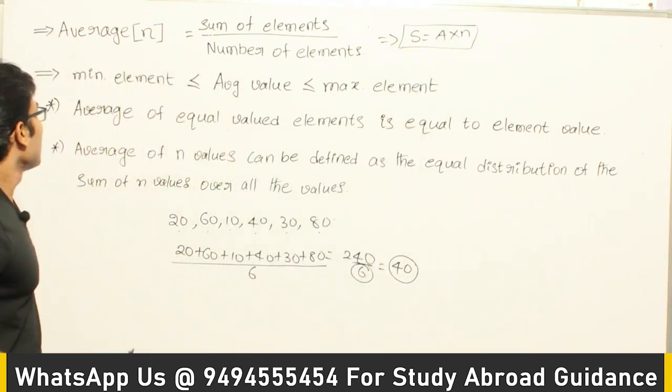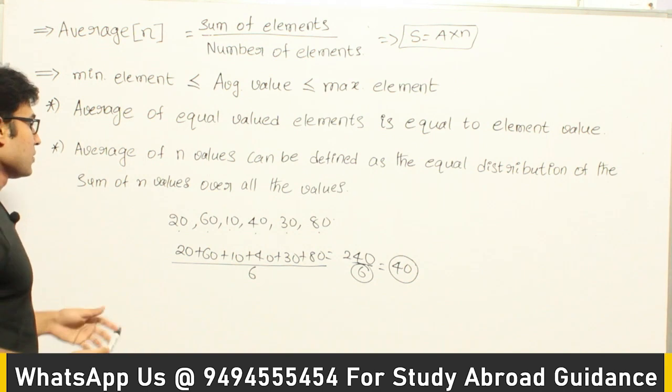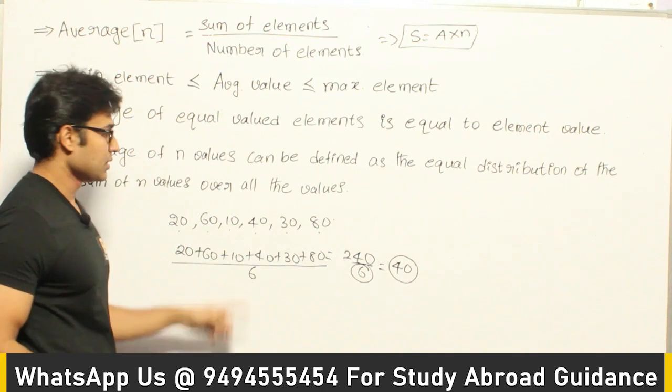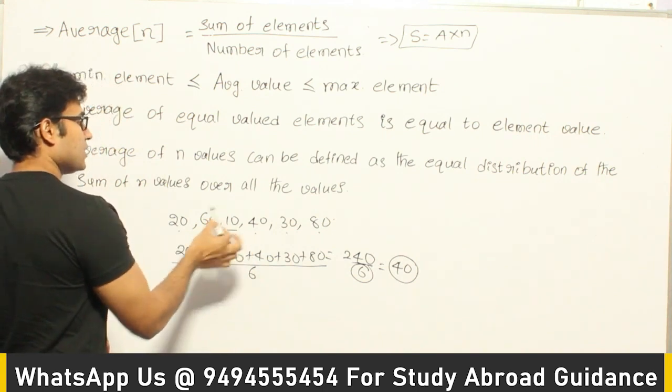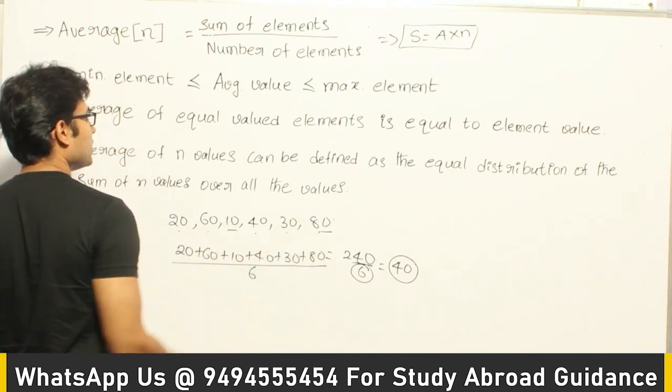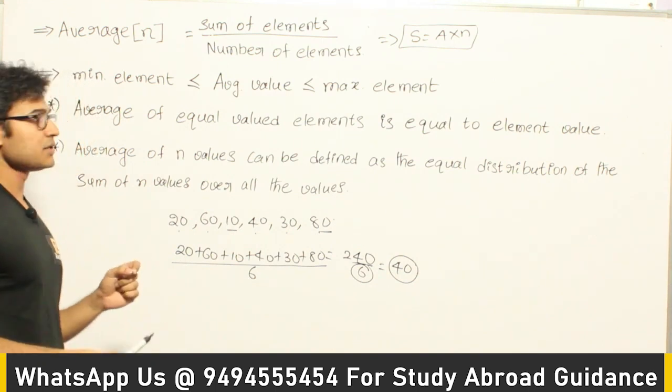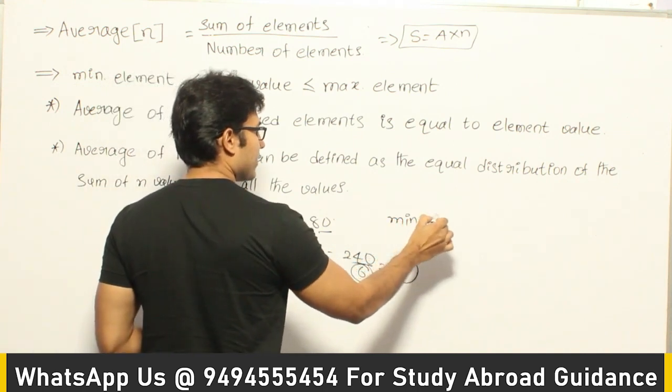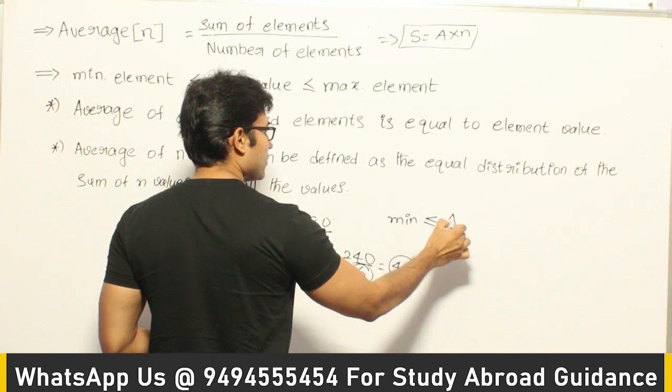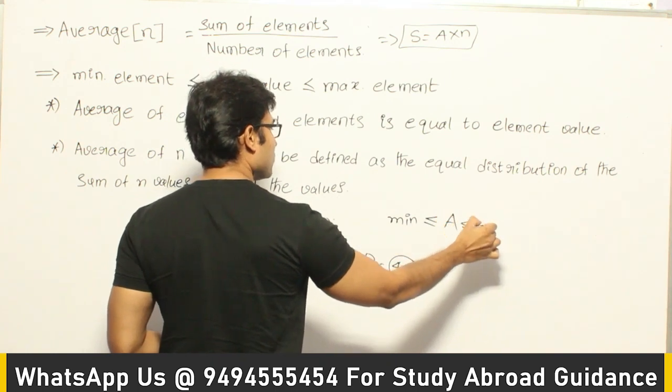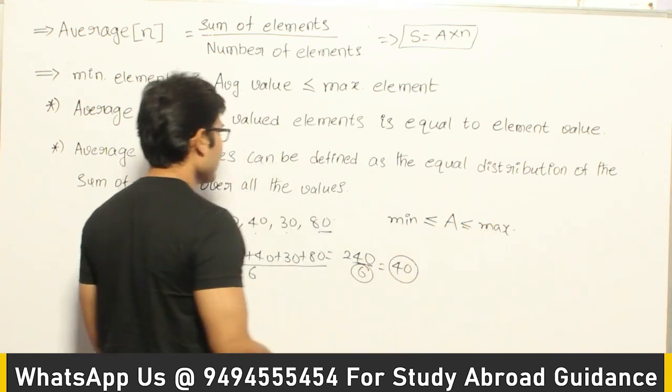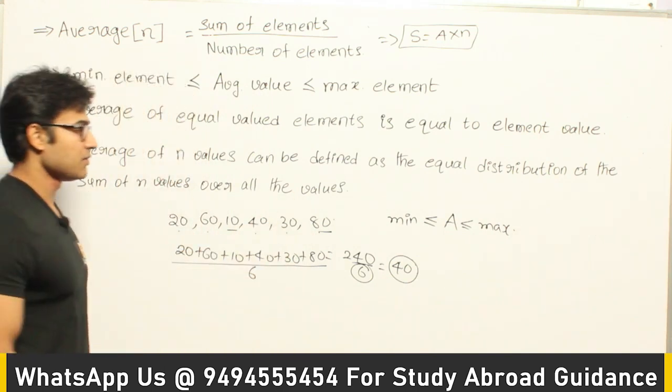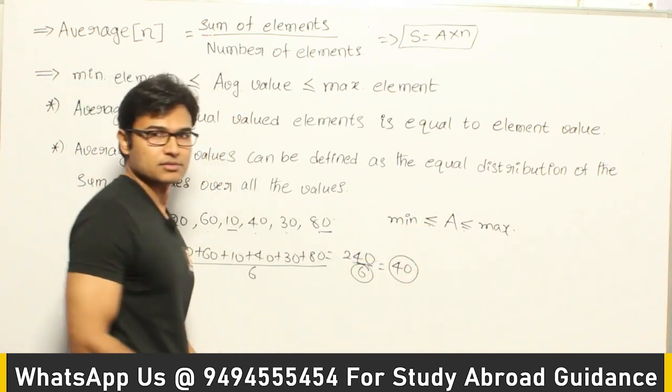And now one more property is if you have collection of elements, and let us assume that they are all of different values. So in this case all are of different values. The minimum value is 10, and maximum value is 80, and the average is 40. Always the relationship between these three numbers is minimum value is less than or equal to average value is less than or equal to max. Now if all the values are equal, then minimum value will be equal to average will be equal to maximum. That is why we are going to have equal symbol here.